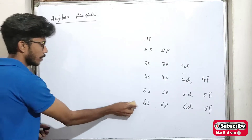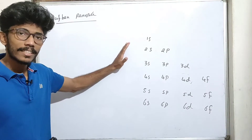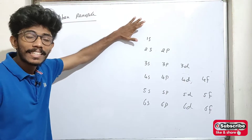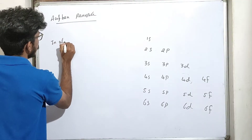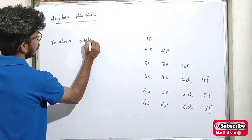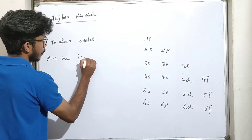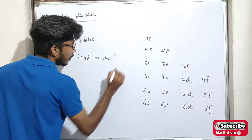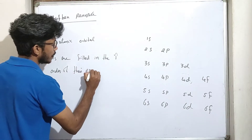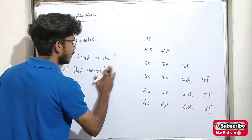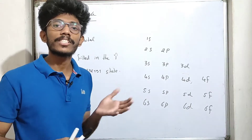What is the Aufbau Principle? The Aufbau Principle states that electrons are arranged in atomic orbitals in the increasing order of their energy level. Electrons are filled in atomic orbitals in the increasing order of energy state.